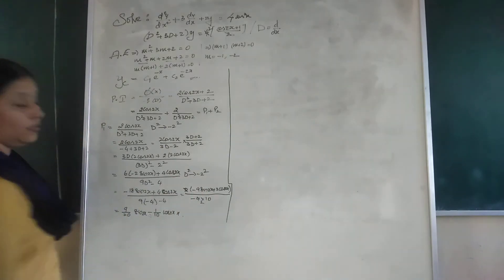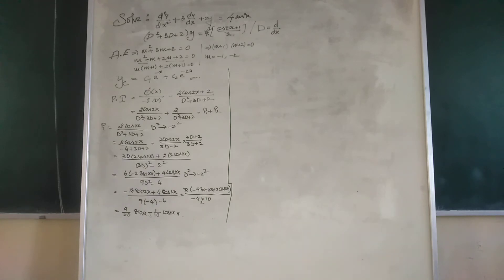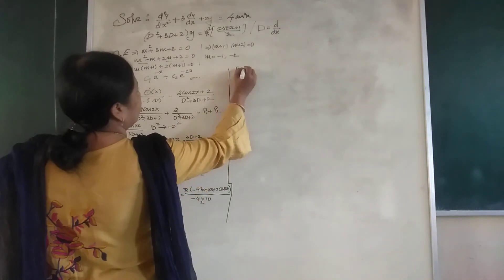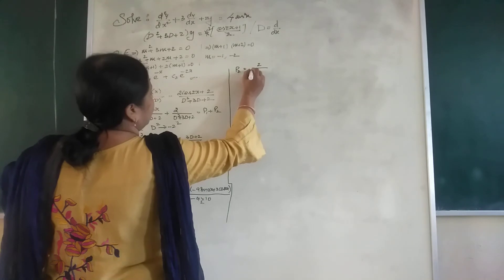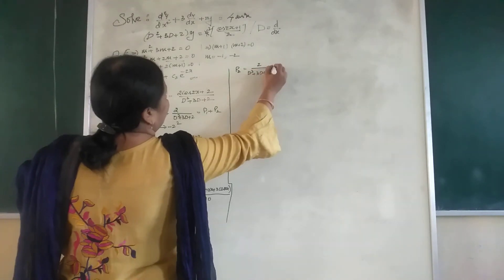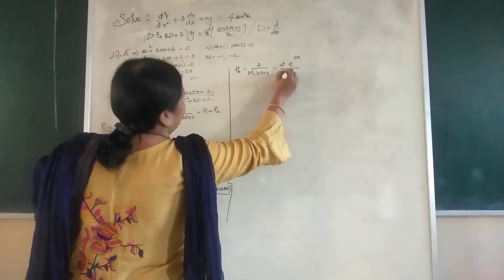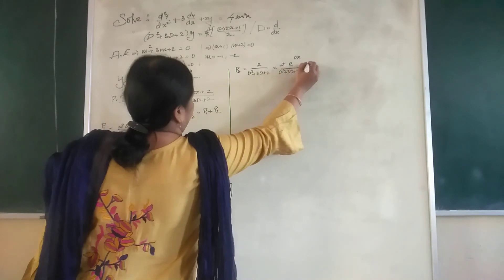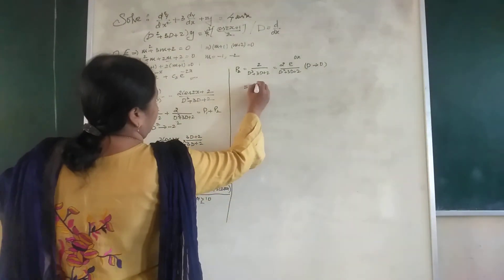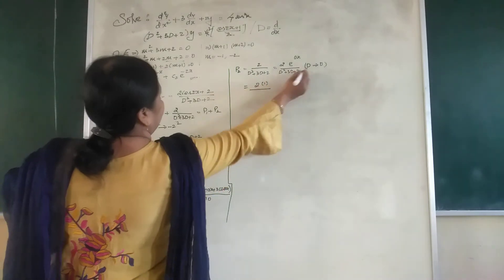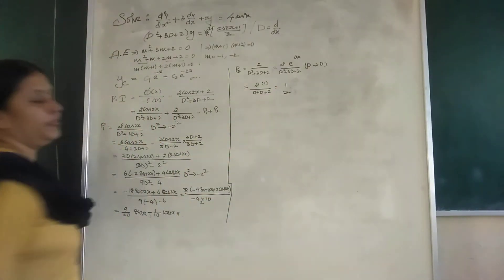Now let us find P2. P2 = 2 / (D² + 3D + 2). This can be treated as Type 1 by introducing e^(0·x), where D is replaced by the coefficient of x in the exponential, which is 0. Replacing D by 0 in the denominator: 0 + 0 + 2 = 2. So P2 = 2/2 × 1 = 1.